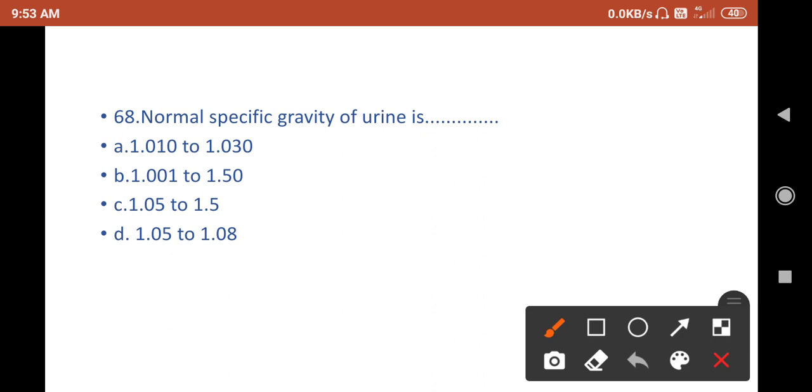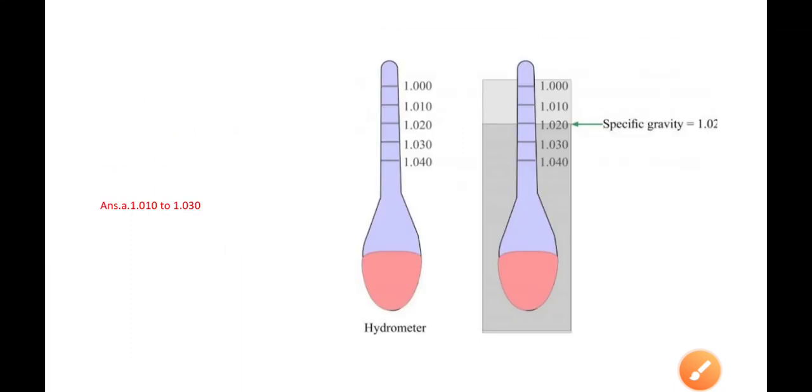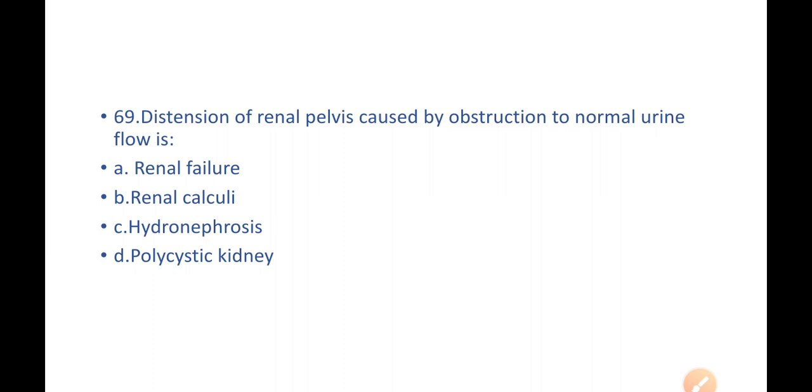Remember, whenever they ask normal parameters, you should be very quick to give the answer. The answer is A, 1.003 to 1.030. Here, this is the range—the normal specific gravity range. Within these limits there could be any one, so it will be considered as normal.